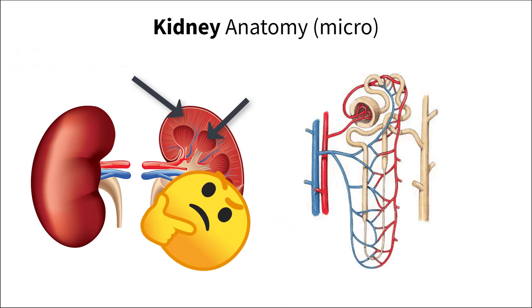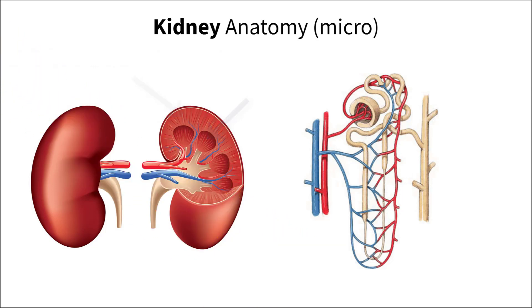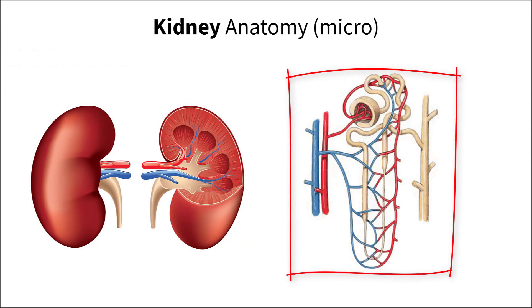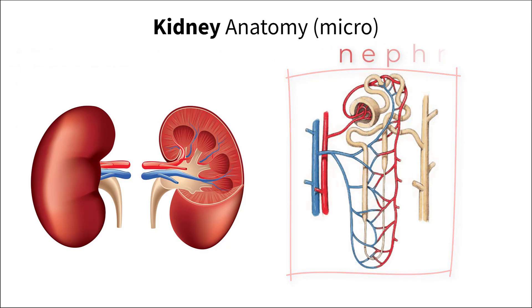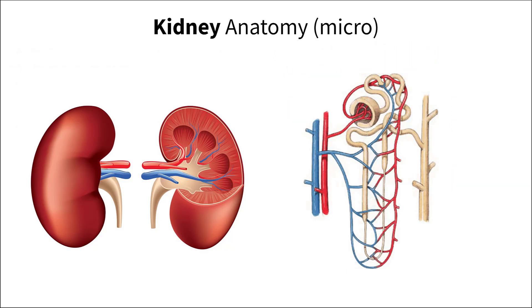At the microscopic scale, we can begin to see the functional structures that exist within the kidney. These structures are called nephrons and can be broken down into smaller parts that have specific functions. For now, let's just focus on the anatomy.